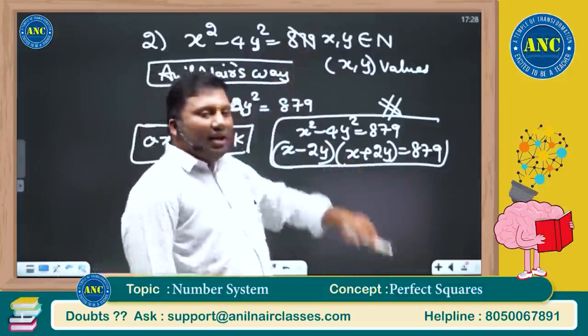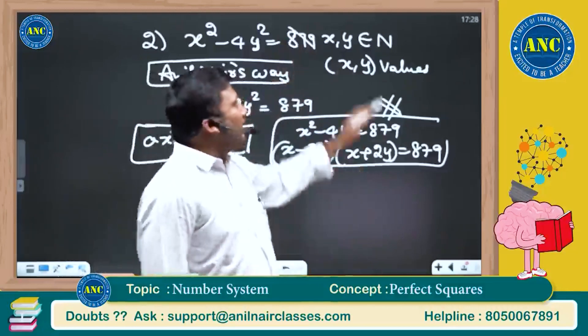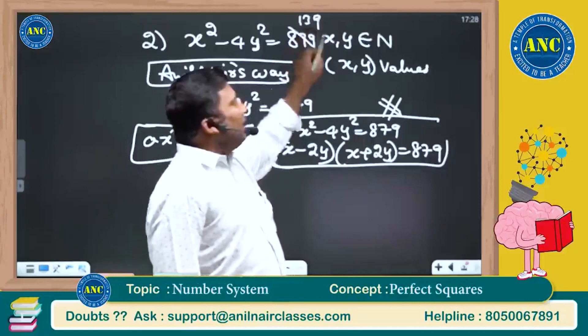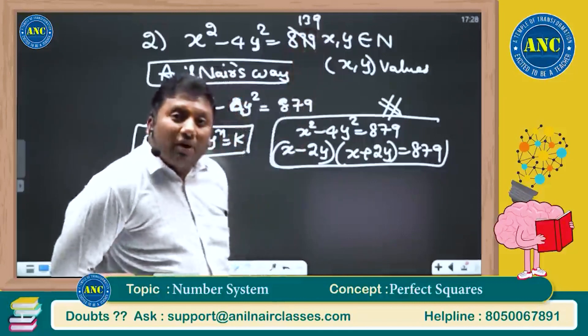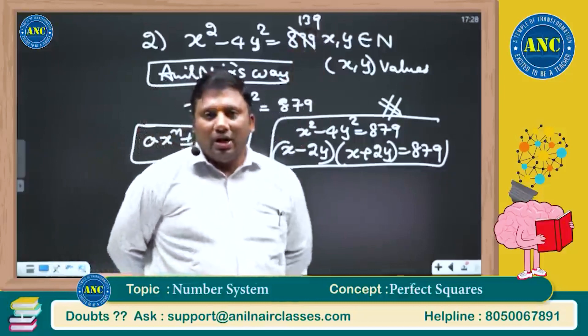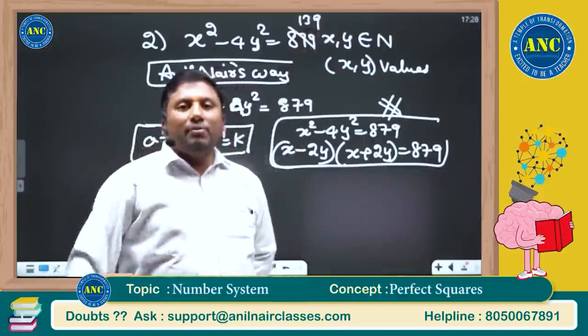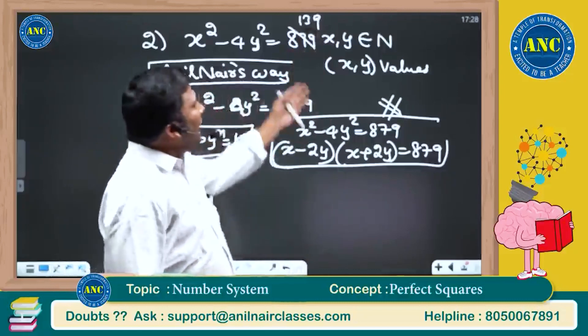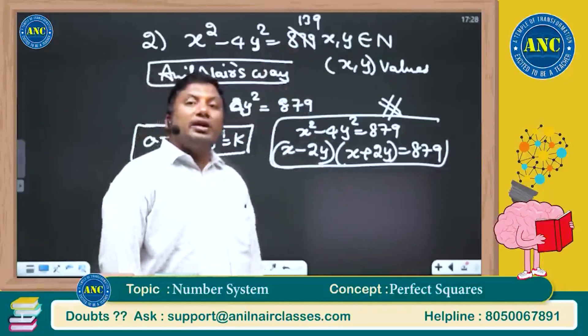What if instead of 879, what if there is some other number, for example, 139? What is the sum of the digits? 1 plus 3, 4. 4 plus 9, 13. You have to check whether a number is a prime number or a composite number. Here we got a composite number, so you can take factors.